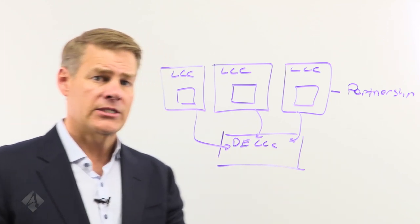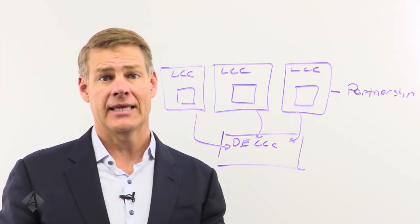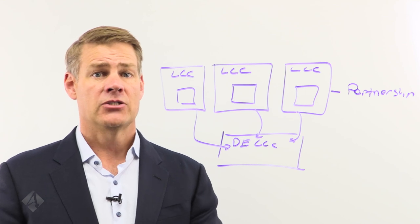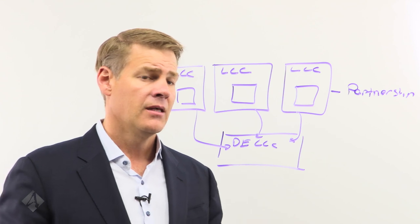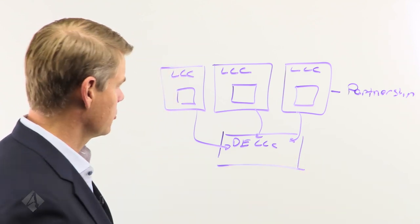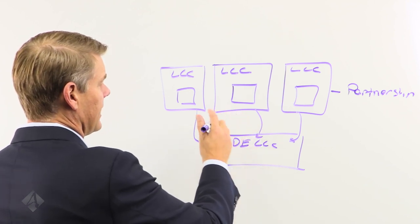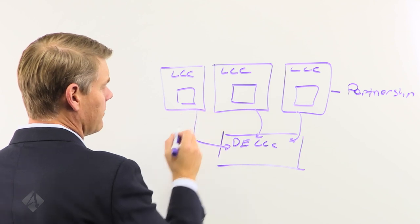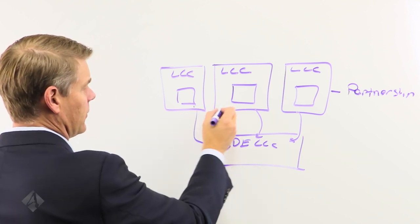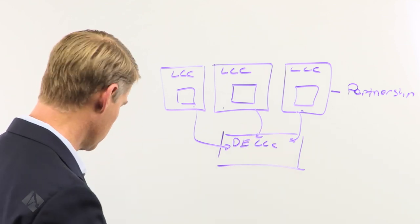One thing to also consider is that if you intend to sell these properties at any given point in time, that is, if you're buying them with the intent to renovate them, stabilize them, and then sell them, then you may not want to follow this structure like this. What you're going to want to do instead is set these up where they file tax returns. So, each of these should be filing separate tax returns rather than using this holding structure.